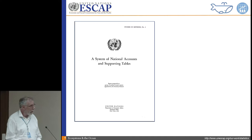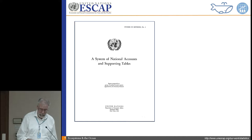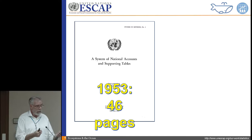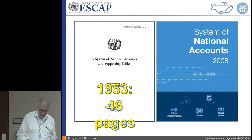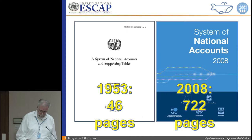In 1953, the System of National Accounts was a 46-page manual. It was developed to deal with the post-war reconstruction of national economies, and it was the main blueprint for 20 years for countries on how to measure their economy. By 2008, it got a bit more complex — only 722 pages. And these are blueprints; they're not the data or the numbers. They're simply the instructions on how to build this complex system.